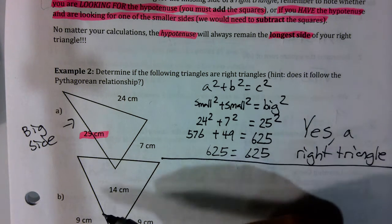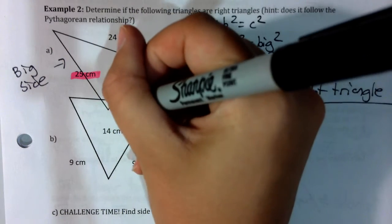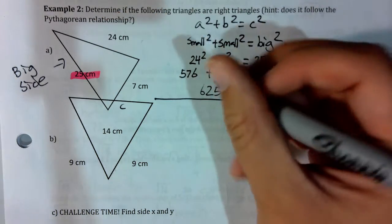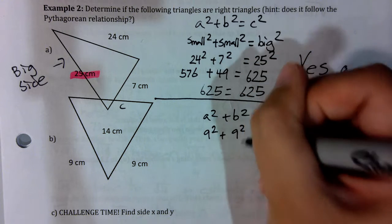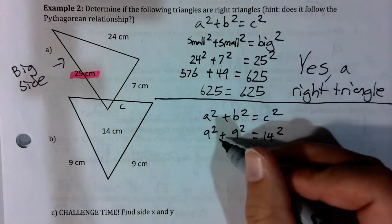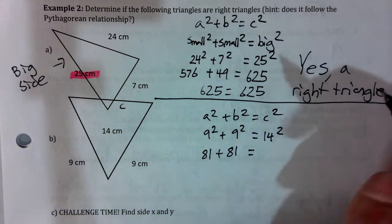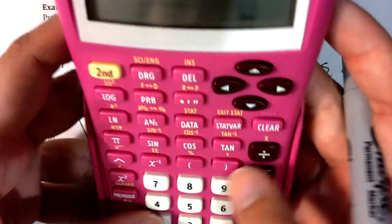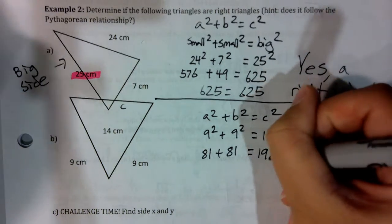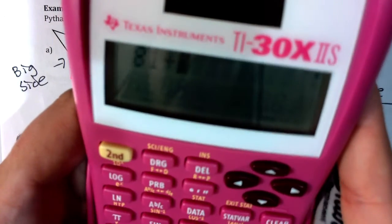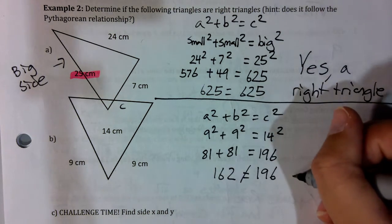For the second triangle, we have two side lengths of 9, and the biggest side — the hypotenuse — is 14. So: 9² + 9² should equal 14². 9 × 9 = 81, plus 81 = 162. 14 × 14 = 196. 162 does not equal 196 — not a right triangle.